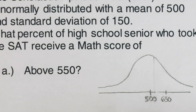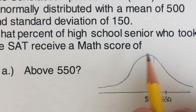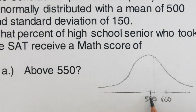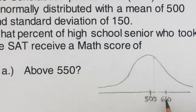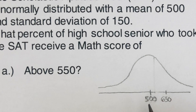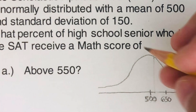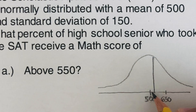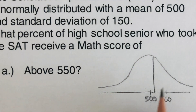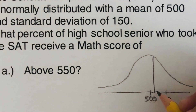I've drawn the normal curve. The mean is 500, placed in the middle. The standard deviation is 150, so one standard deviation above the mean is 650, because 500 plus 150 equals 650. Since we're talking about above 550, that value falls somewhere between the mean and one standard deviation above. We're interested in determining the area under this curve that is above 550.